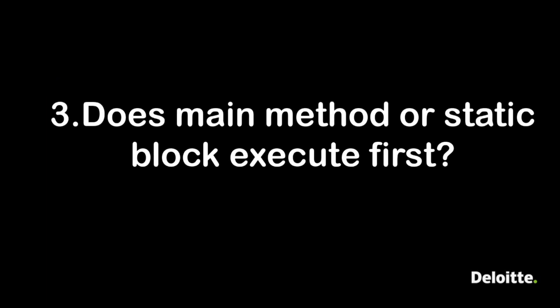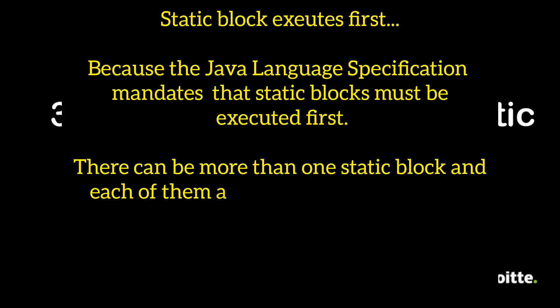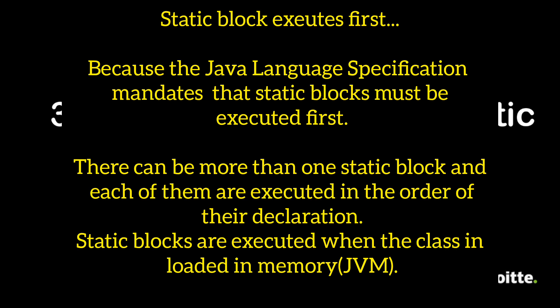Next question: does the main method or static block execute first? The static block always executes first because the Java Language Specification mandates it. There can be more than one static block and each is executed in the order of declaration. Static blocks are executed when the class is loaded into memory, that is, the JVM.